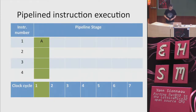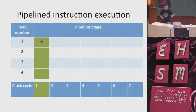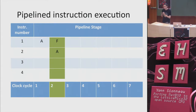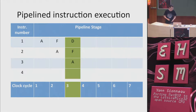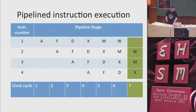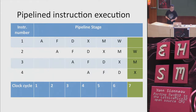How does the pipeline work in reality? At the first clock cycle, the first instruction is in the address stage. At the next cycle it moves to fetch, while the second instruction enters the address stage — we don't want stages sitting idle; we want all hardware blocks used at 100% efficiency. Each cycle, instructions advance through the pipeline. When the pipeline is full, there is always one instruction being executed per clock cycle — it's pretty efficient.